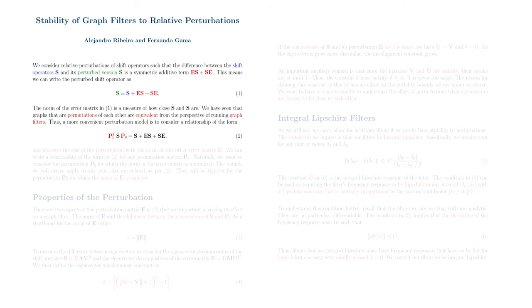The norm of the error matrix in equation 1 is a measure of how close S and S-hat are. We have seen that graphs that are permutations of each other are equivalent from the perspective of running graph filters. Thus, a more convenient perturbation model is to consider a relationship in which we multiply the left-hand side by a permutation matrix P sub 0. We measure the size of the perturbation with the norm of this other error matrix E. We can write a relationship of the form in equation 2 for any permutation matrix P sub 0.